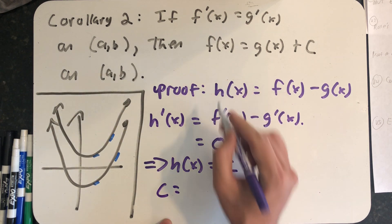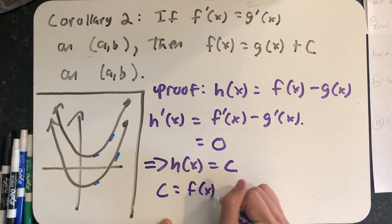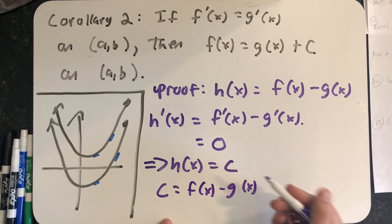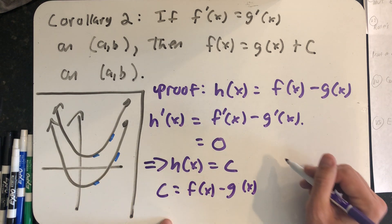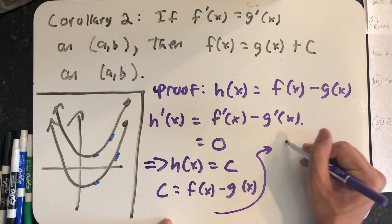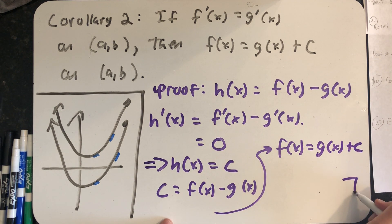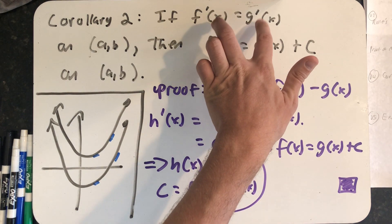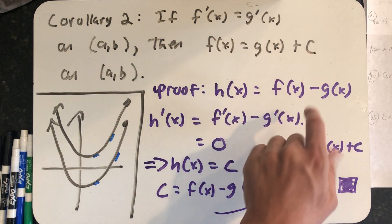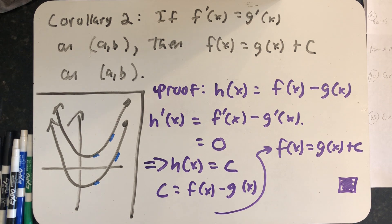So c equals f(x) minus g(x). And by adding g(x) to both sides, I get the conclusion that f(x) equals g(x) plus some constant c. And that finishes my proof of the second corollary to the mean value theorem, that if I have two functions whose derivatives are always the same, those functions differ by, at most, a constant.